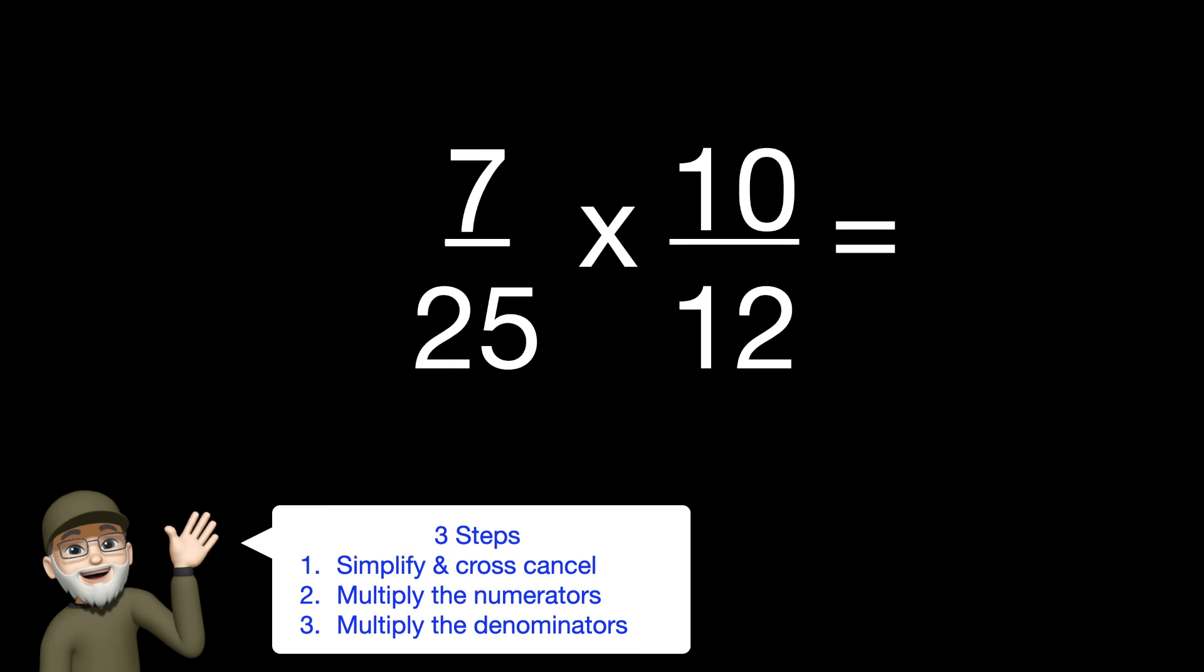Let's look at another problem that's just slightly different. 7 twenty-fifths times 5 twelfths. Our first step is to simplify and cross-cancel.